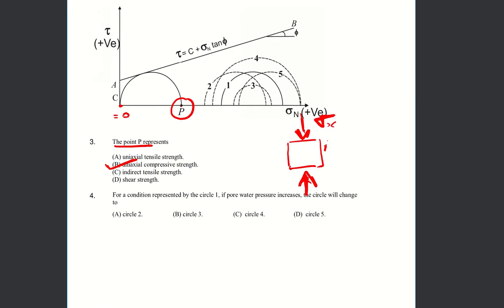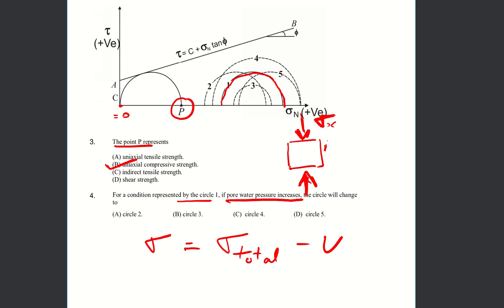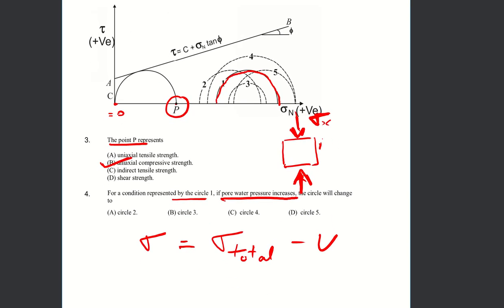Moving on to problem four. For a condition represented by circle one, if pore water pressure increases, how is this circle going to change? Is circle one going to look like circle three, five, four, or two? What will it end up looking like if we increase the water pressure?